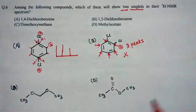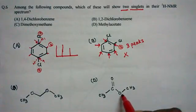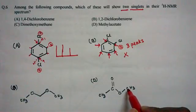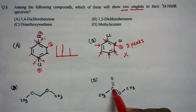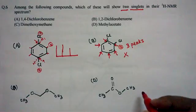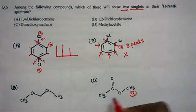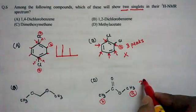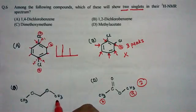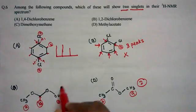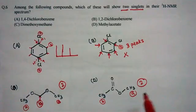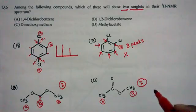Here we have a hydrogen attached to a carbon which is further attached to oxygen, and here the carbon with the hydrogens is attached to another carbon. So there are two different chemical environments — type 1 proton and type 2 proton — giving two peaks. For this compound also, the hydrogens here and here have the same electronic environment, while this point has a different environment, so we again get two peaks.